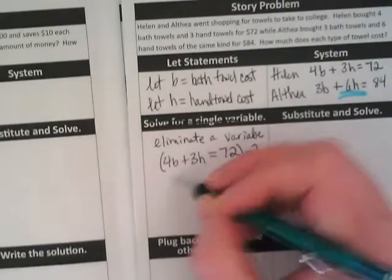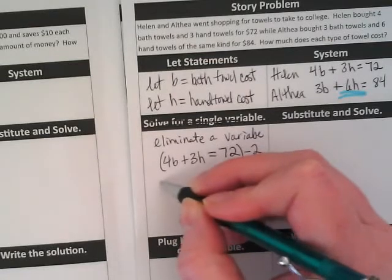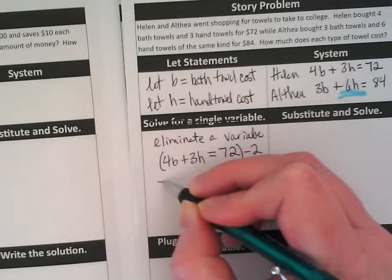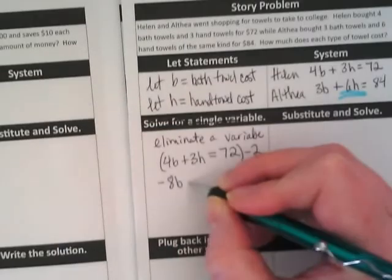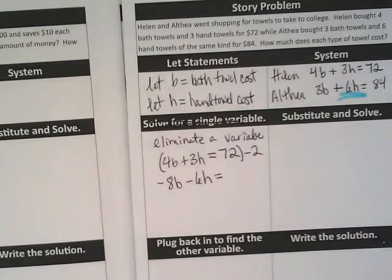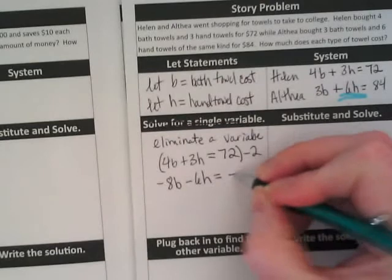So, negative 2 times 4B is going to be negative 8B. Negative 2 times 4B. Negative 8B. Minus 6H equals negative 144. Is it? Negative. Yeah. I think you're right, but I don't trust my brain this morning. 72 times negative 2. Yes. I trusted your brain. Equals negative 144.